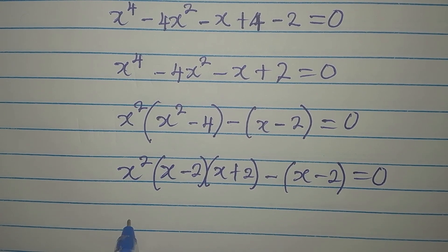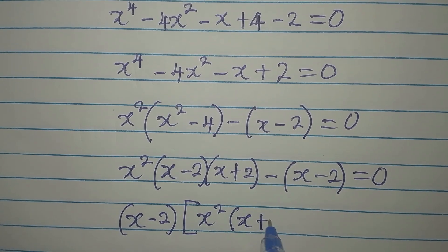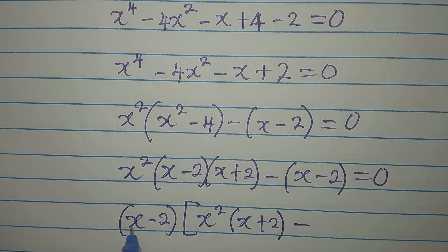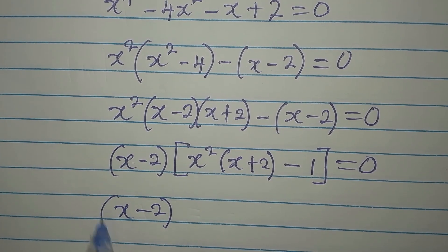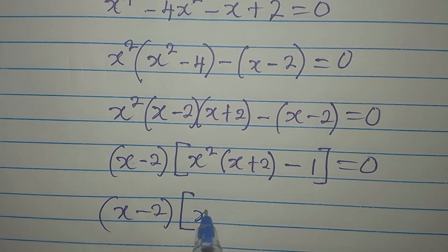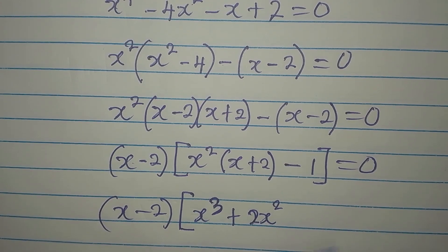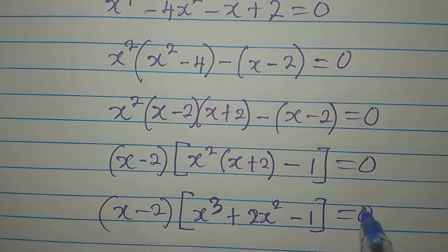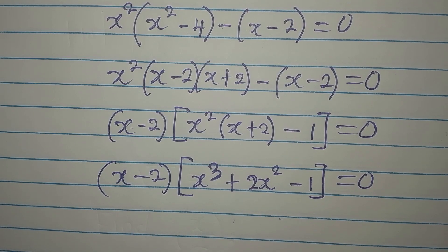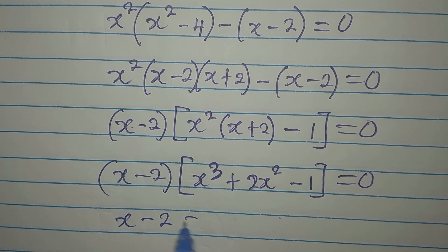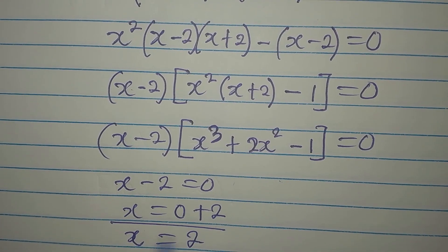So we have x minus 2 into x plus 2, minus x minus 2. What is common to both terms is x minus 2, so x minus 2 comes out as a common factor. Then inside we have x squared into x plus 2, then minus 1. Setting x minus 2 equal to 0 gives x equals 2. This is one of the solutions.